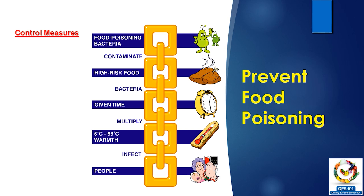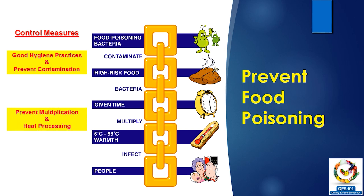The control measures are good hygiene practices and preventing contamination — you will find full controls on that in the contamination video. Then, prevent multiplication and do heat processing like cooking and thorough killing of microorganisms — these controls are fully described in the multiplication and survival videos. Finally, even after all of these controls, if you feel that the food is still unfit, do not serve it to consumers. Destroy the food — that is a better option rather than serving food which is going to cause food poisoning to people.